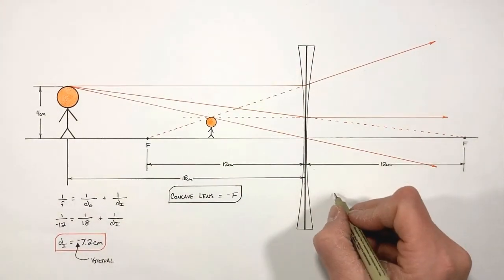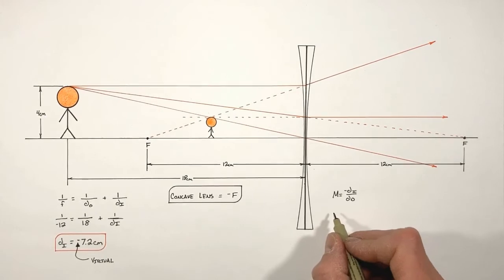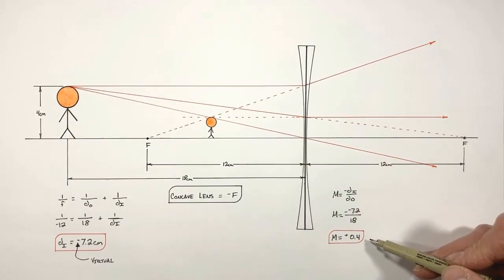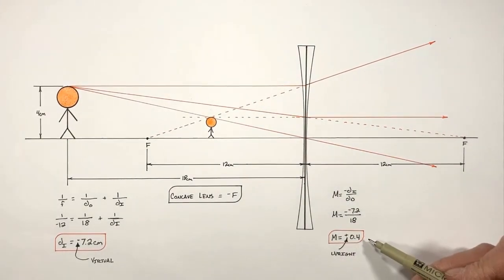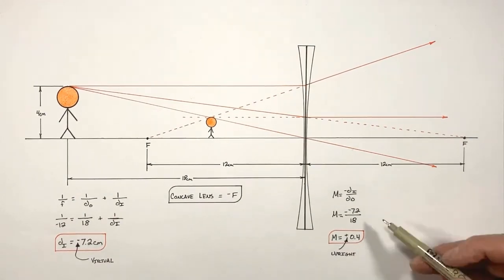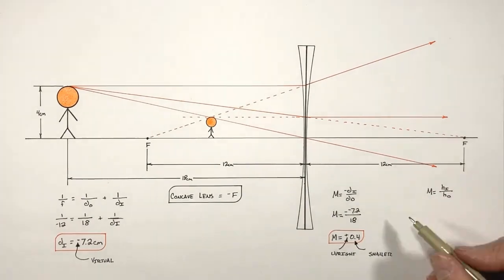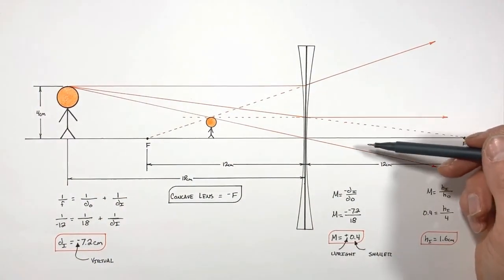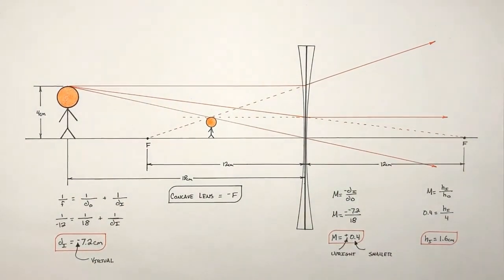Next let's solve for the magnification. The magnification equation for a lens is the same as for a mirror. Plugging in our values, we find a magnification of positive 0.4: the positive value indicating the image is upright, and since the magnification is less than one the image is smaller than the object. Finally, calculating the image height, we find it is 1.6 centimeters. This is how you draw a ray tracing diagram and perform the necessary calculations for an object placed in front of a concave lens.